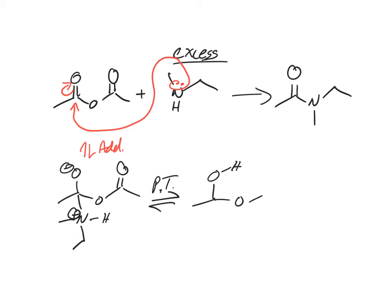We're going to put that proton on the O minus because that's the most electron-rich place. So now we have a tetrahedral intermediate. Now we want to look for our best leaving group. What's our best leaving group now?